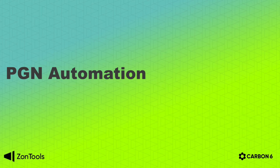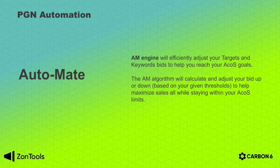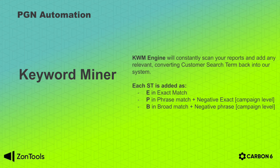We've shown you what's inside the PGN and now we're going to cover the PGN automation that works specifically only within the PGN, and is available to you only if you have a dominator plan, which is our highest plan. There are 6 specific automations within the PGN. First is the Automate 3.0 AM engine, which will efficiently adjust your targets and keyword bids to help you reach your ECOS goals. The AM algorithm will calculate and adjust your bid up or down based on your given thresholds to help maximize sales while staying within your ECOS limits. Next, the keyword miner engine, which will constantly scan your reports and add any relevant and converting customer search terms back into our system. This will organically grow your campaigns in a controlled, 100% automated environment. Each time we find a profitable relevant search term we're going to take it and add it as a keyword: in the exact campaign as exact match.